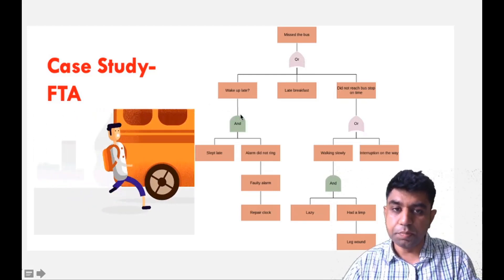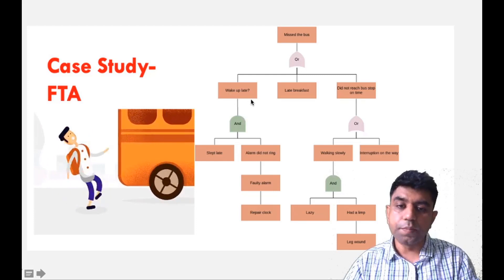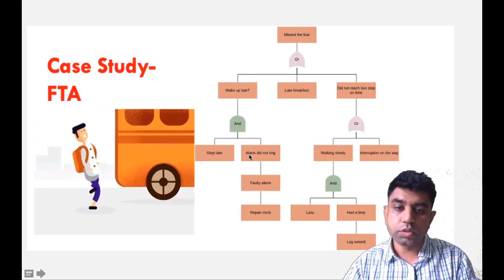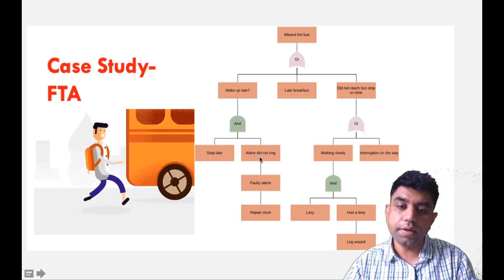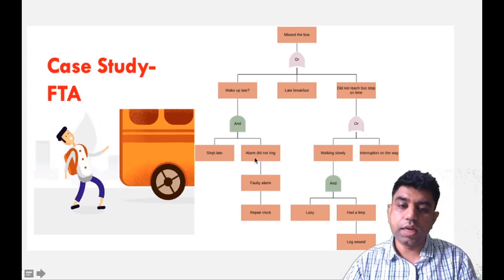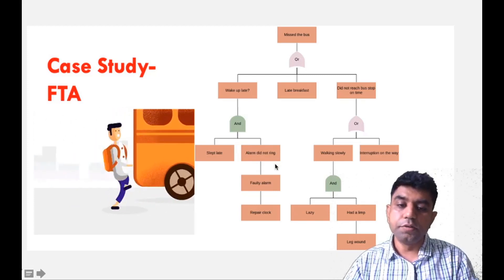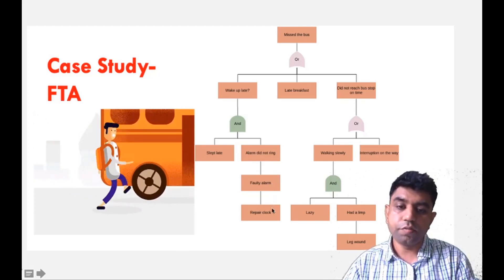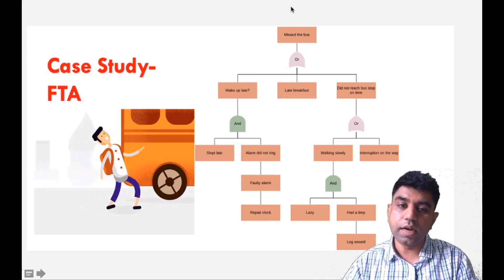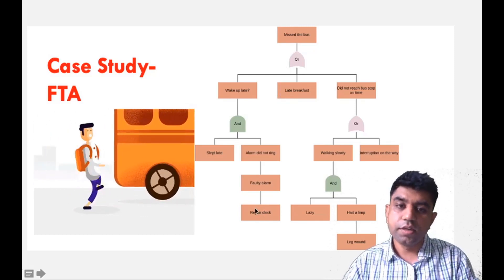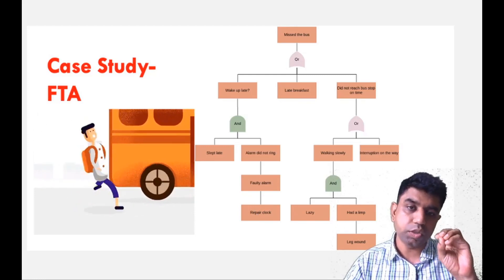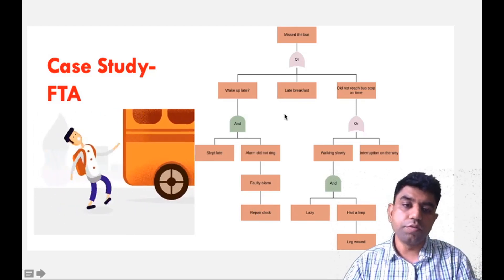Coming to sub-branches of the tree — if you wake up late, then again OR possibilities exist: maybe you slept late or the alarm did not ring. Going more depth into that part, the alarm did not ring may be due to a faulty alarm, and for that you need to go for repair of the clock. So just imagine — getting late for the bus is related to repairing the clock. In such a way you can come to the conclusion of where the problem is, and this is how you can improvise the quality.